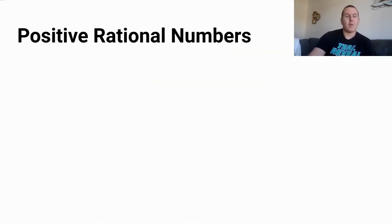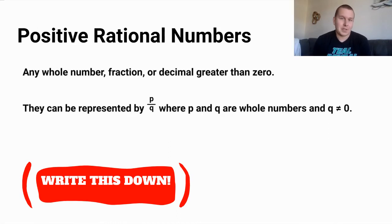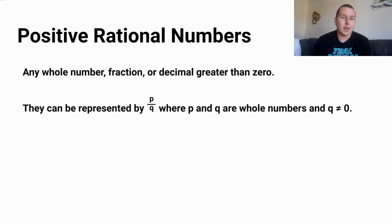So when we put all these numbers together or these words together, we can have this definition for positive rational numbers. They're any whole number, fraction, or decimal greater than zero. They can be represented by p over q, where p and q are whole numbers, and q does not equal zero.